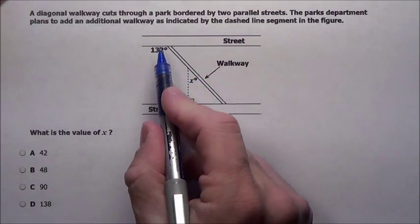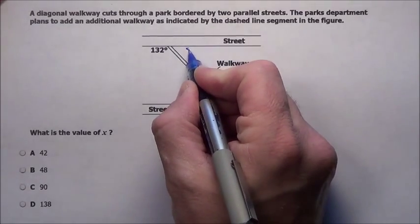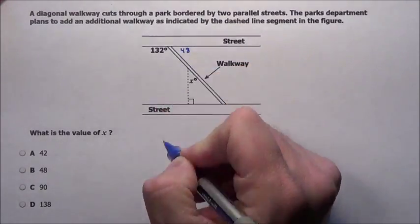So let's figure some things out. If this is 132, it's a linear pair right here. Well, we just put an 8, that would make 140, so that's 48.